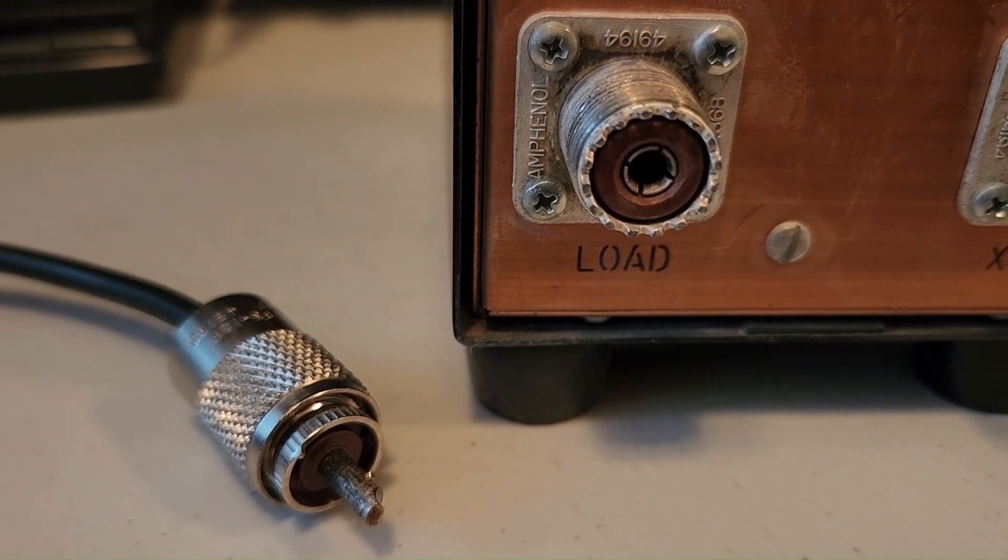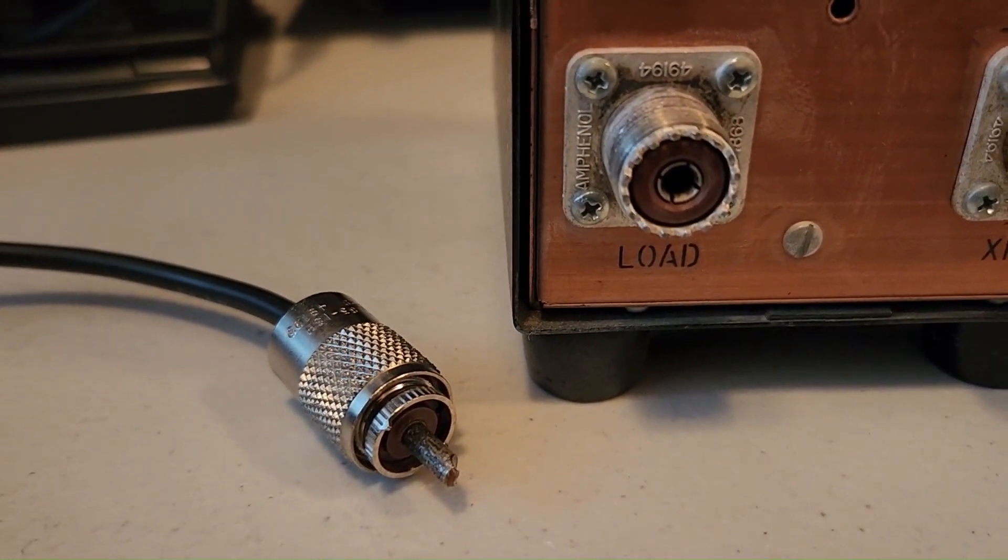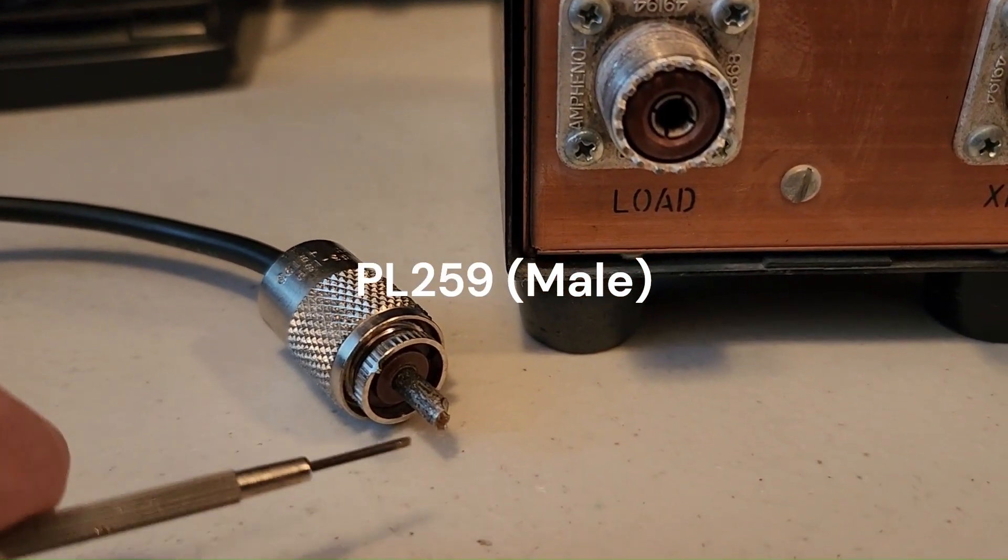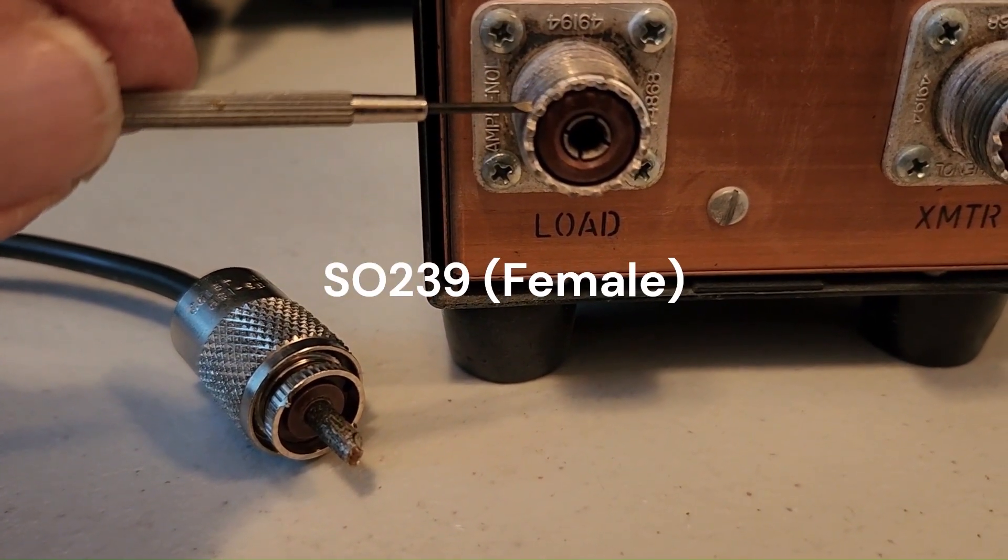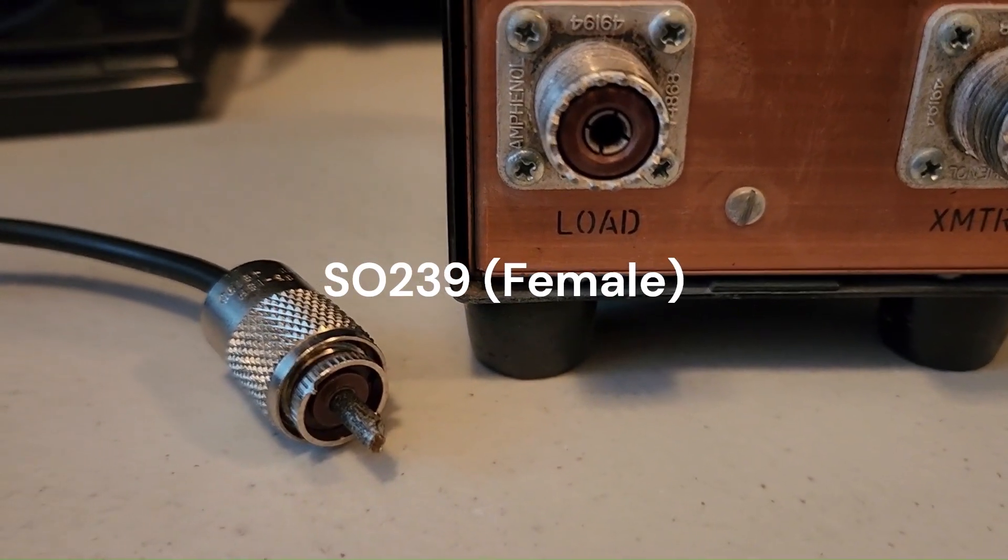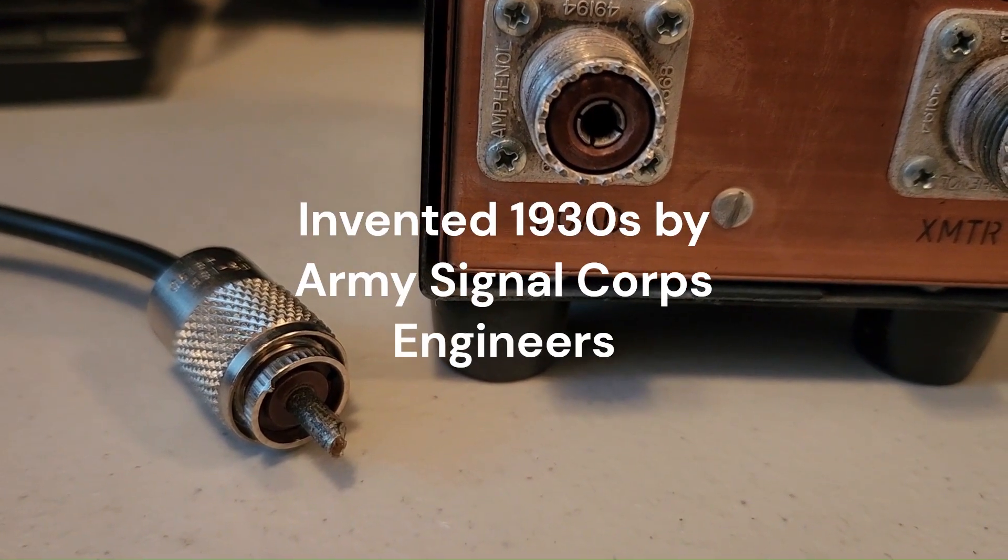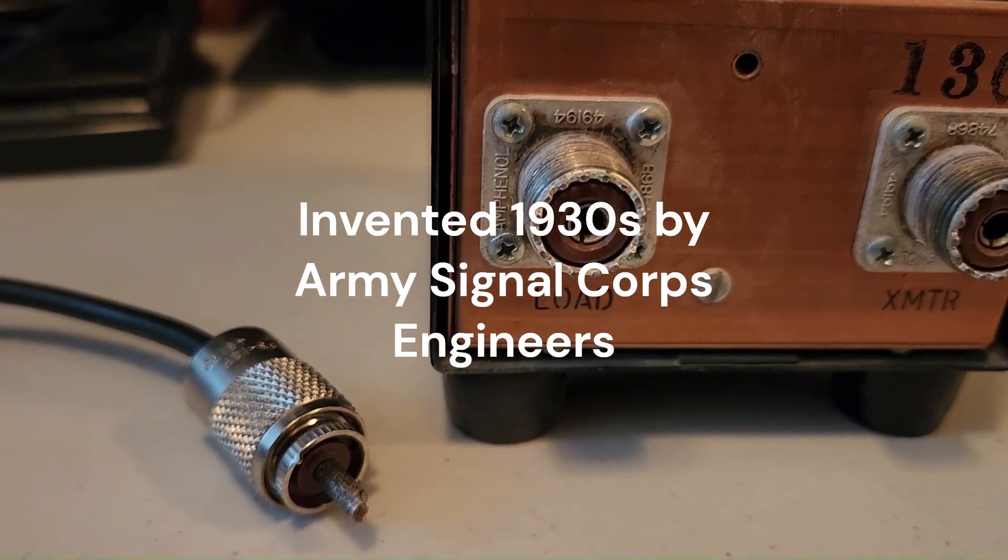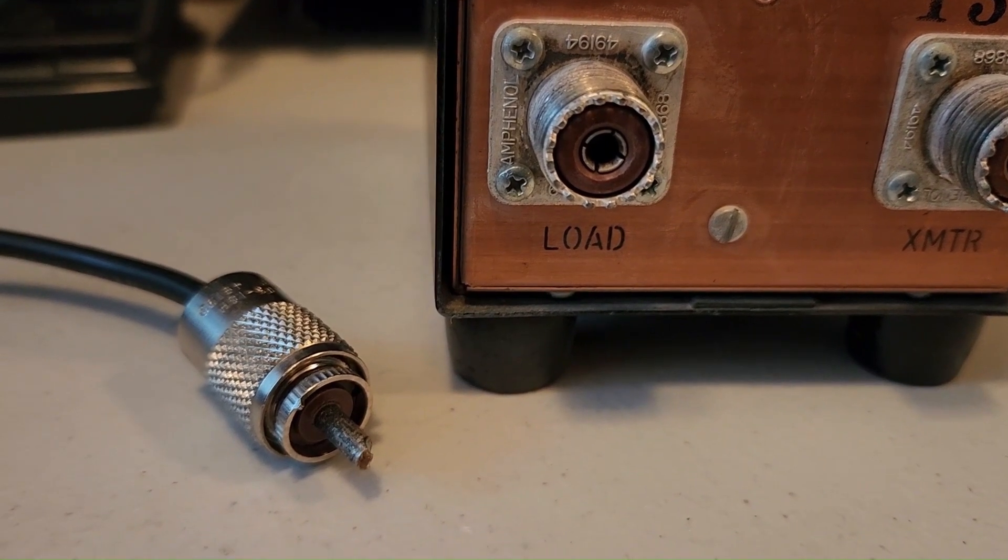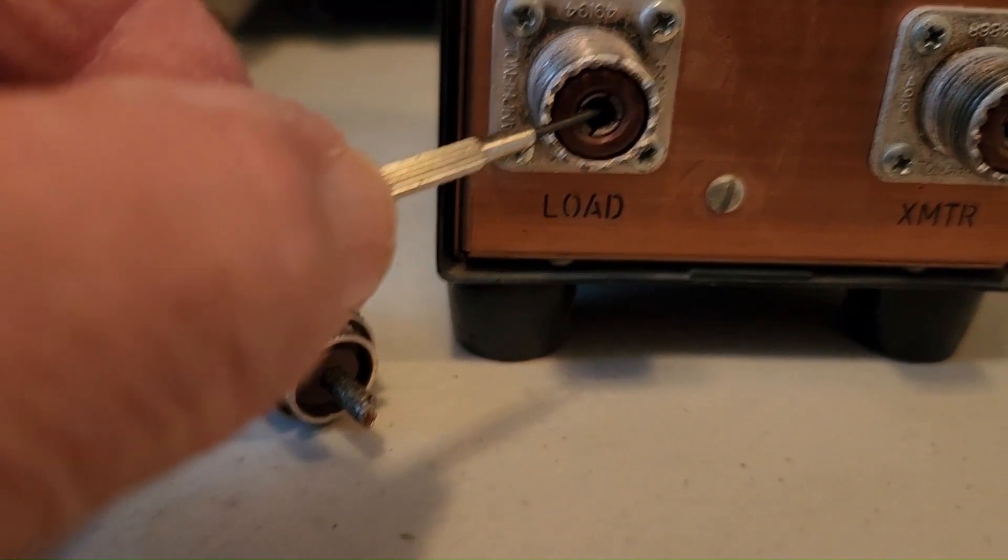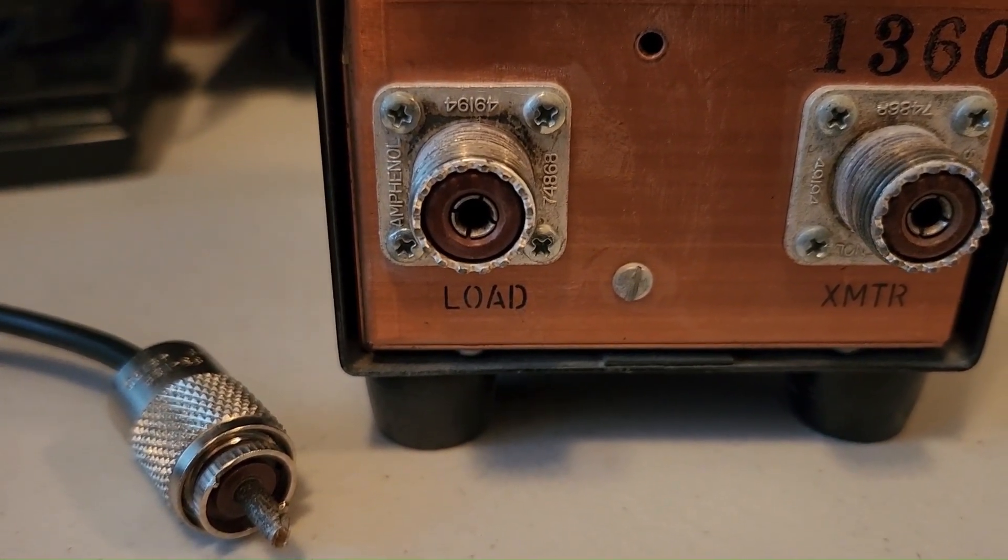The original connector and the oldest connector out there is the PL259 and the SO239, its mate. They were invented in the 1930s by the Army Signal Corps. Part of the reasoning behind the connector was because a lot of antennas used was just a wire antenna. They designed it so the center conductor there would take a banana pin connector.